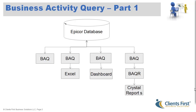The Business Activity Query, also known as the BAQ, queries the EPICOR database and displays the data in the BAQ screen. It can also be exported to Excel, displayed in an EPICOR dashboard, and printed on a Crystal Report. BAQs can also update the database, but that will be covered in a later video.